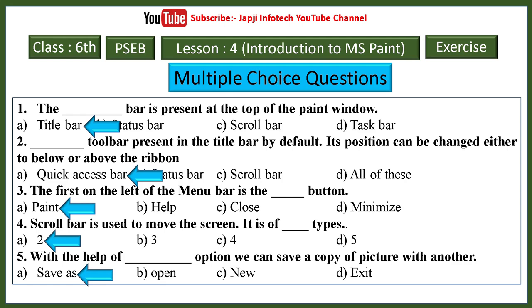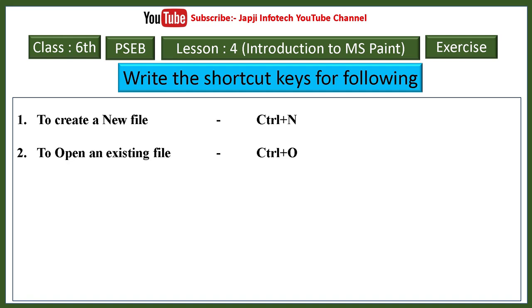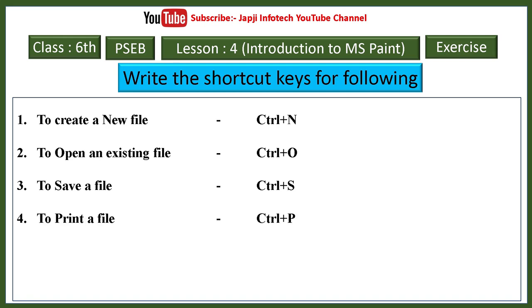Shortcut keys in lesson four: to create a new file use Ctrl+N; to open an existing file use Ctrl+O; to save a file use Ctrl+S; to print a file use Ctrl+P; to undo use Ctrl+Z; to redo or repeat any action use Ctrl+Y.